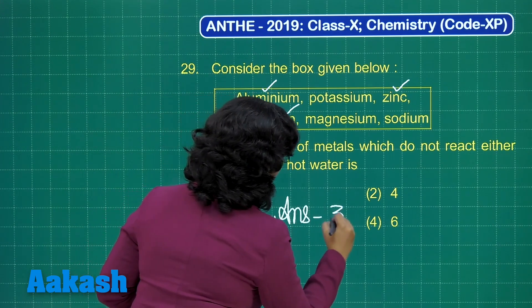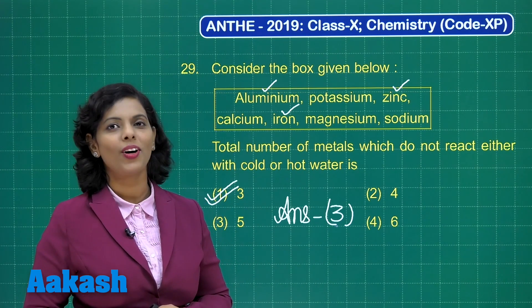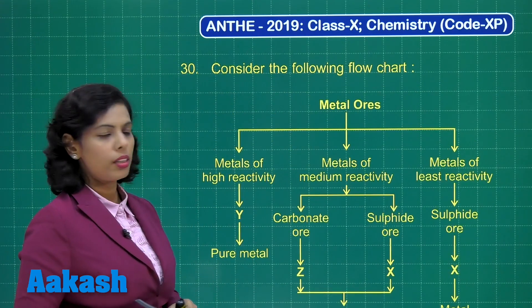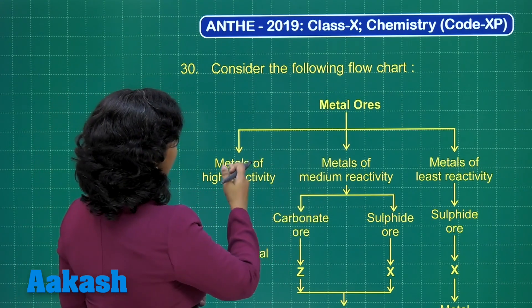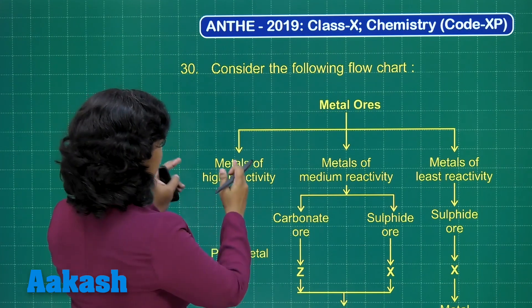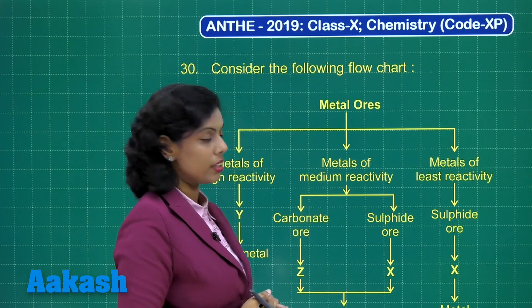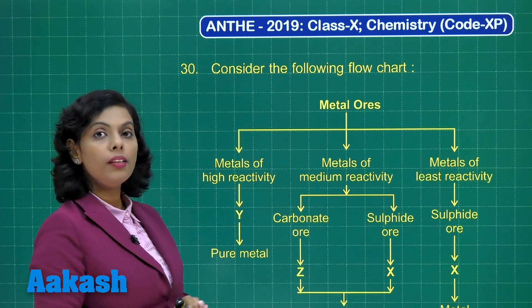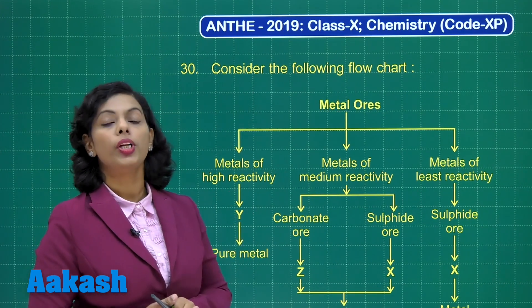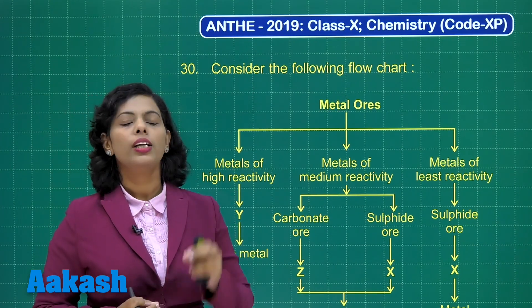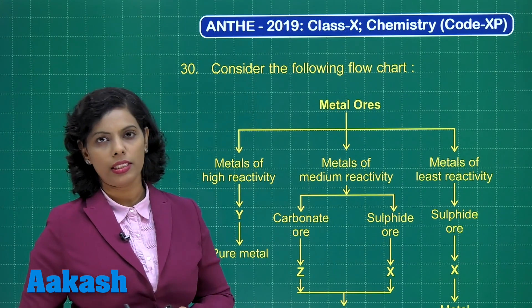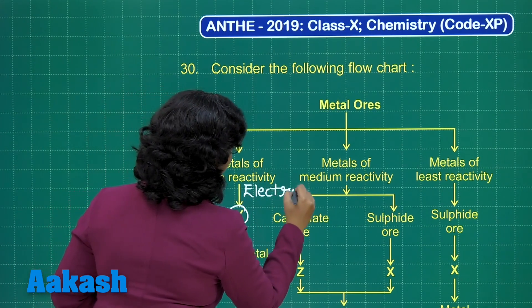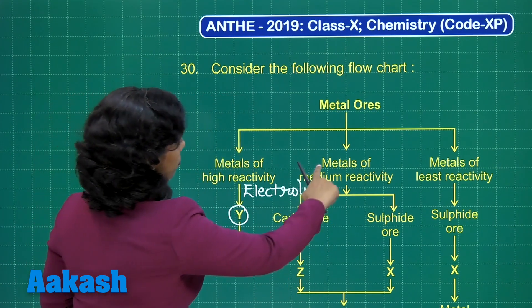Now it's time for the last question of the chemistry section of ANTHE 2019. Consider the following flow chart. We have metal ores classified on the basis of reactivity: metals with high reactivity, medium or moderate reactivity, and least reactivity. For metals of high reactivity, the only way to obtain their pure form is electrolysis — so Y is the process of electrolysis.